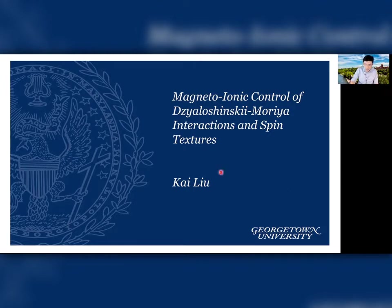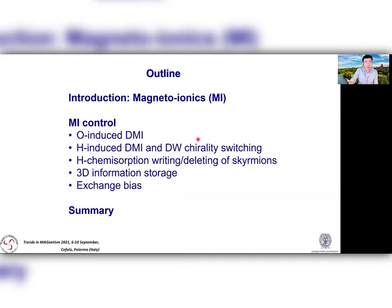Here is the outline of my talk. I will give a brief introduction to magneto-ionics. Then I will primarily illustrate chemisorption-induced DMI using oxygen and hydrogen, and the control of spin textures such as domain wall chirality switching and writing/deleting of skyrmions. If time permits, I will discuss briefly the potential use of such effects in 3D information storage and also touch upon magneto-ionic control of exchange bias. Finally, I will summarize the talk.